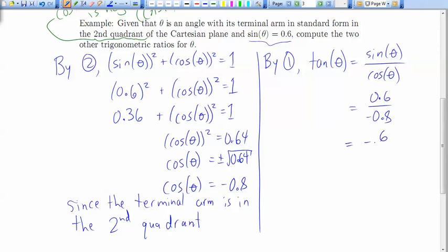So we've got negative 6 over 8 as our fraction, or in lowest terms, negative 3 quarters. So very quick to find our tangent ratio. And now we have all three primary trig ratios calculated for this mystery angle theta.